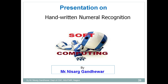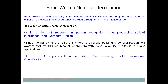Handwritten numeral recognition is a project to recognize any handwritten number efficiently on a computer. The input is either an optical image or currently provided touch input — mouse or pen. You can attach a touchpad and write any number for the system to recognize. It is part of OCR, but handwritten numeral recognition majorly focuses on detecting handwritten numbers specifically.